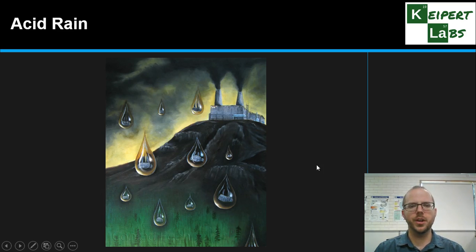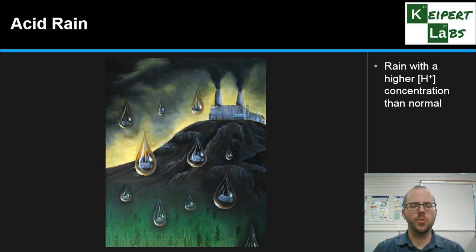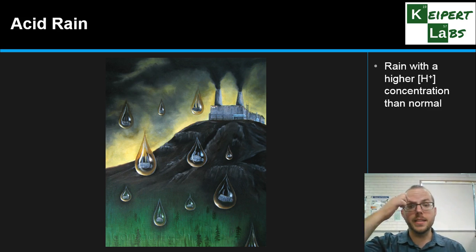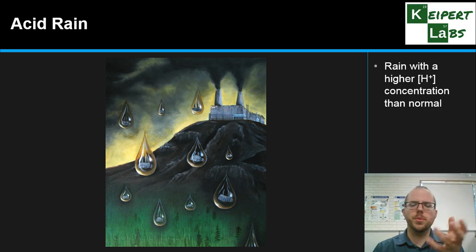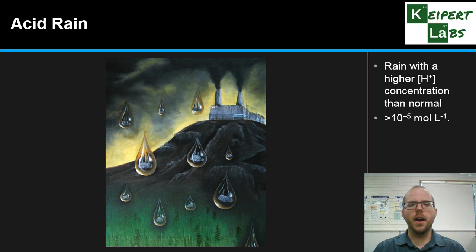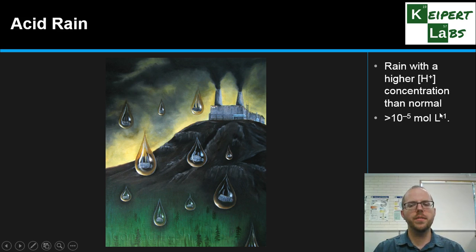So how do we define acid rain more generally? Rain that has a higher hydrogen ion concentration than normal. Normal rain has a hydrogen ion concentration of around 10 to the minus 6 moles per litre — slightly more acidic than a neutral substance because of carbon dioxide in the air. Acid rain has a hydrogen ion concentration greater than about 10 to the minus 5, so around 10 to 1,000 times greater than typical rain — roughly pH 5 or pH 4 — which is more acidic than the environment is typically used to.